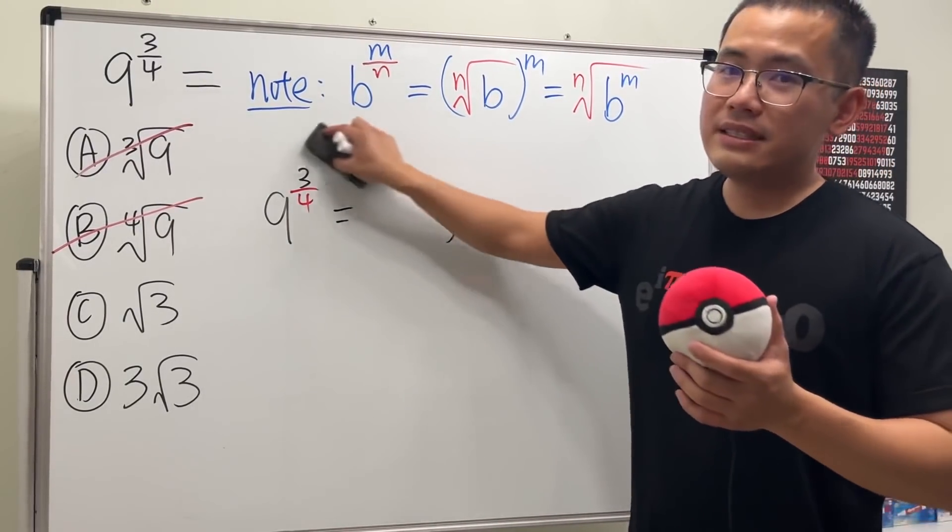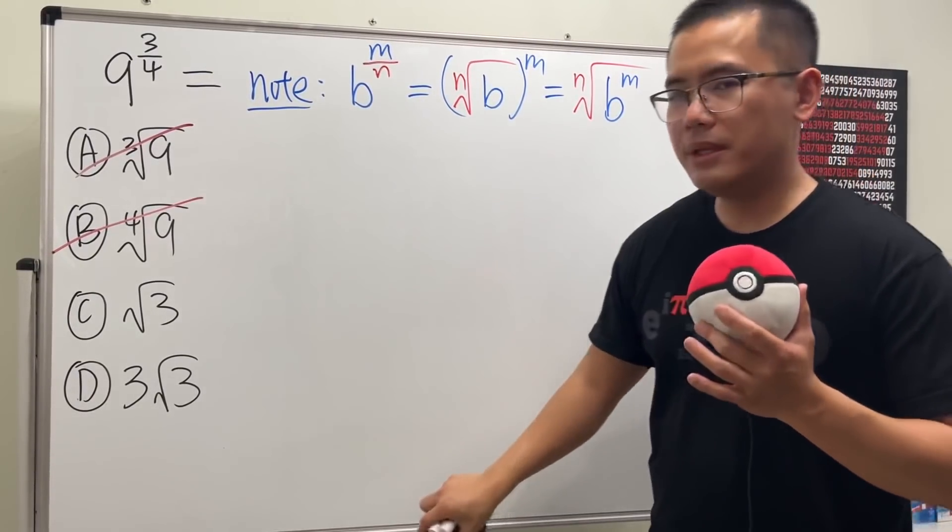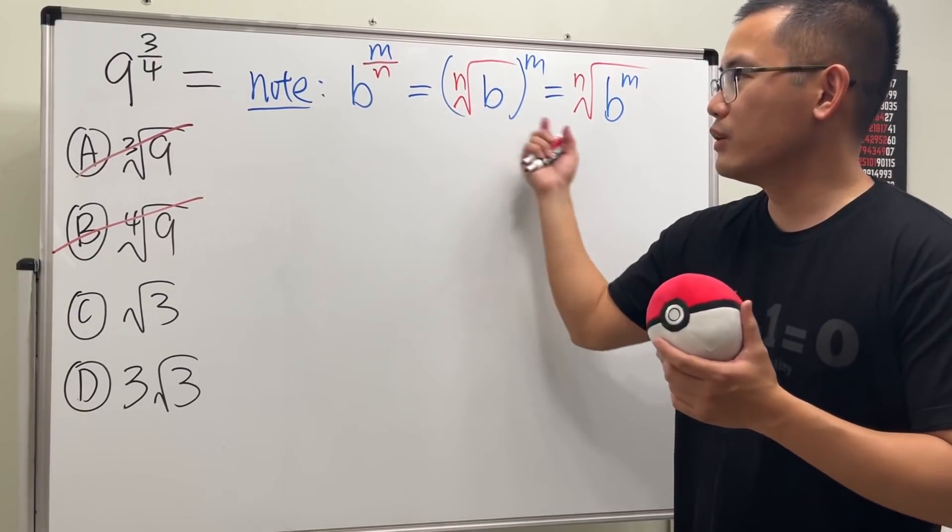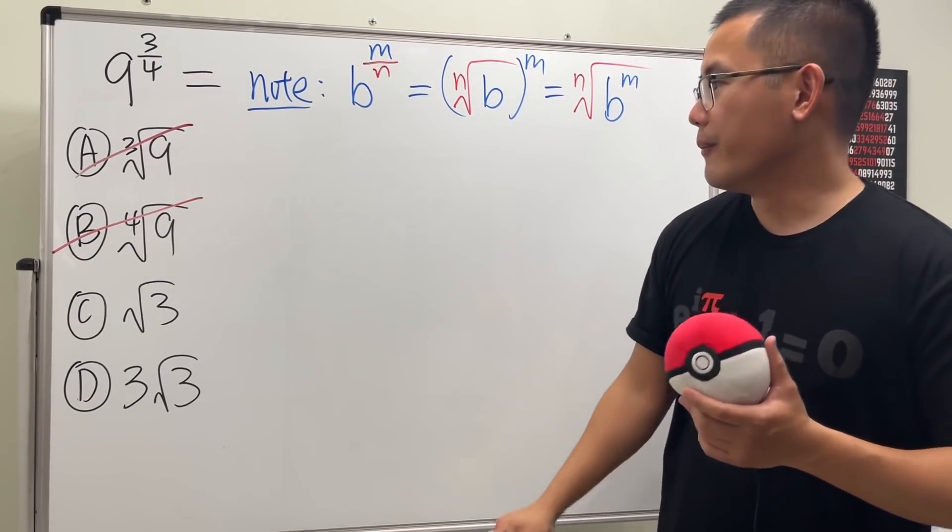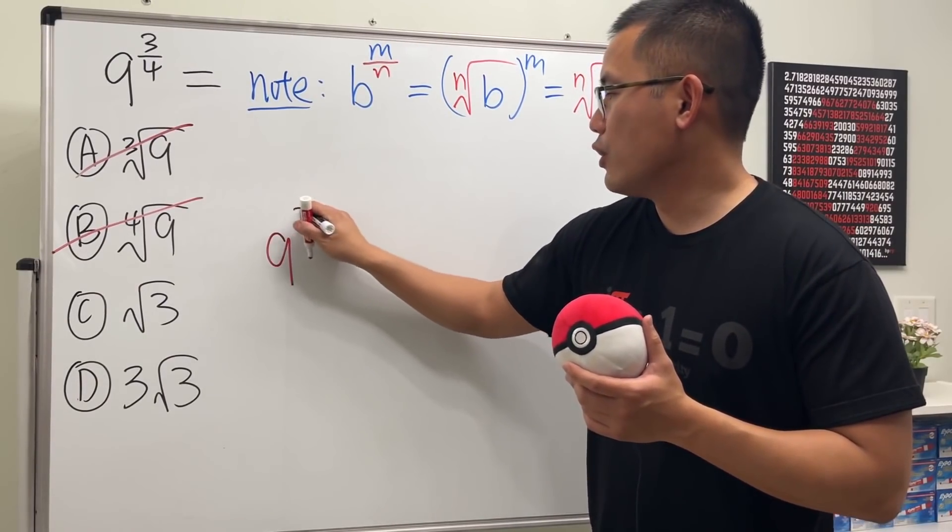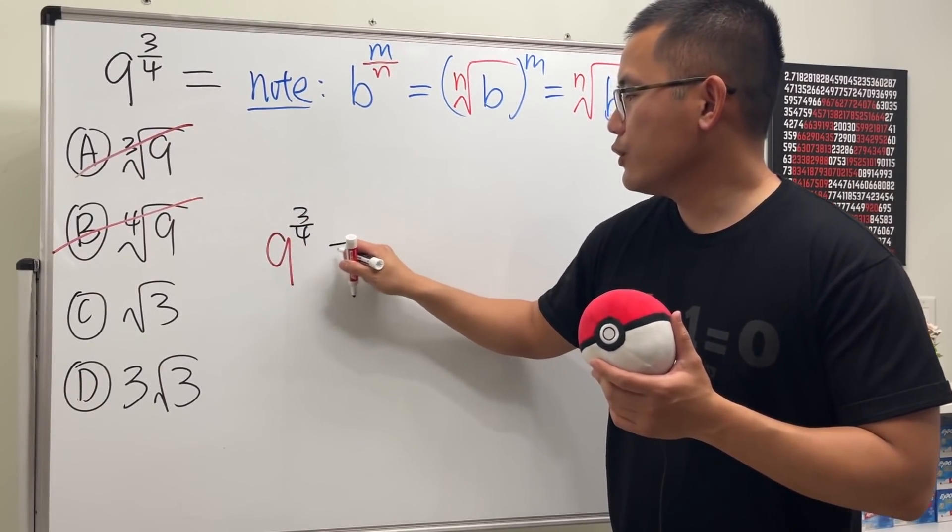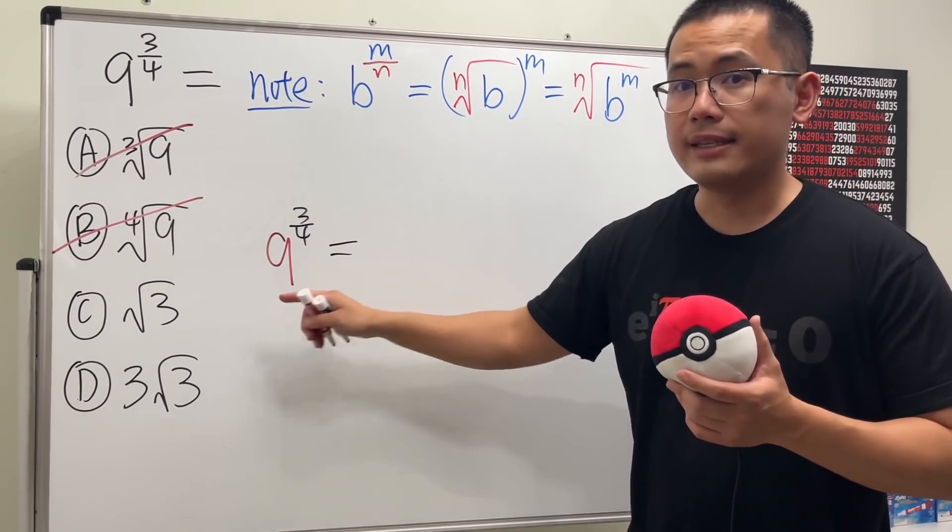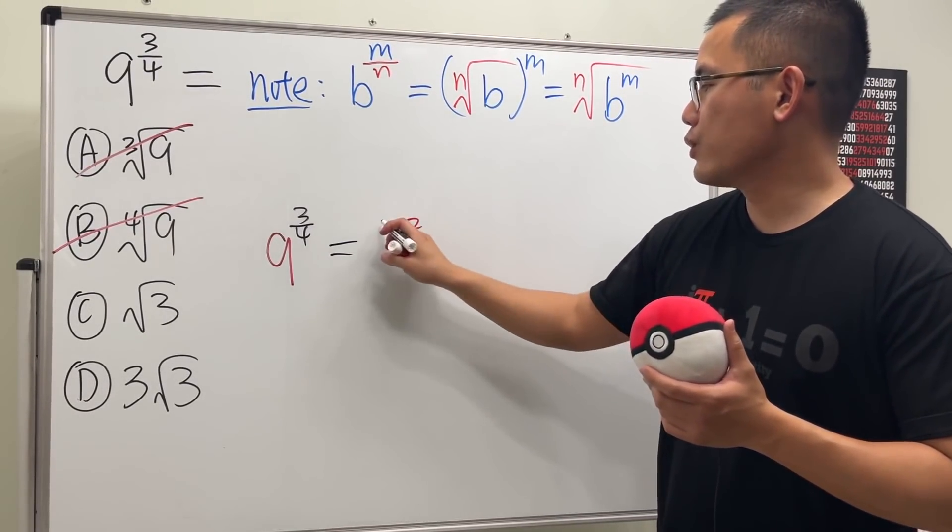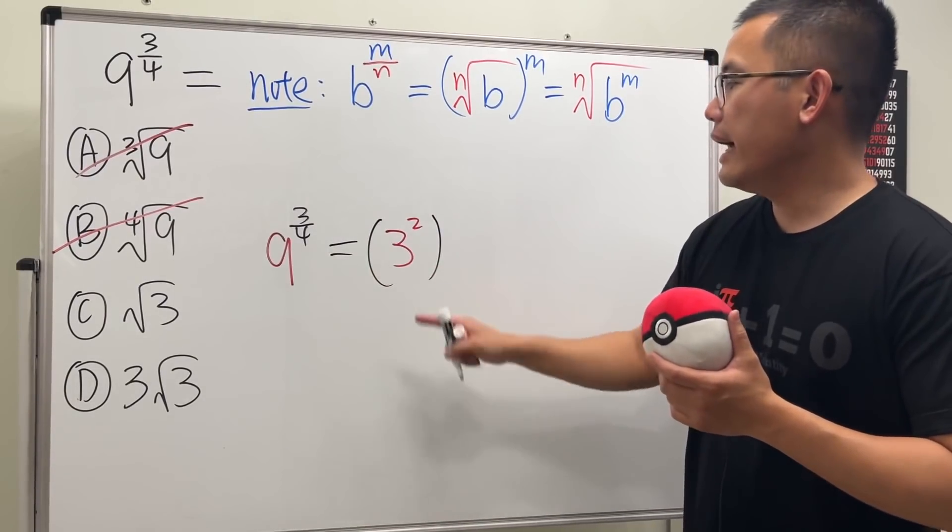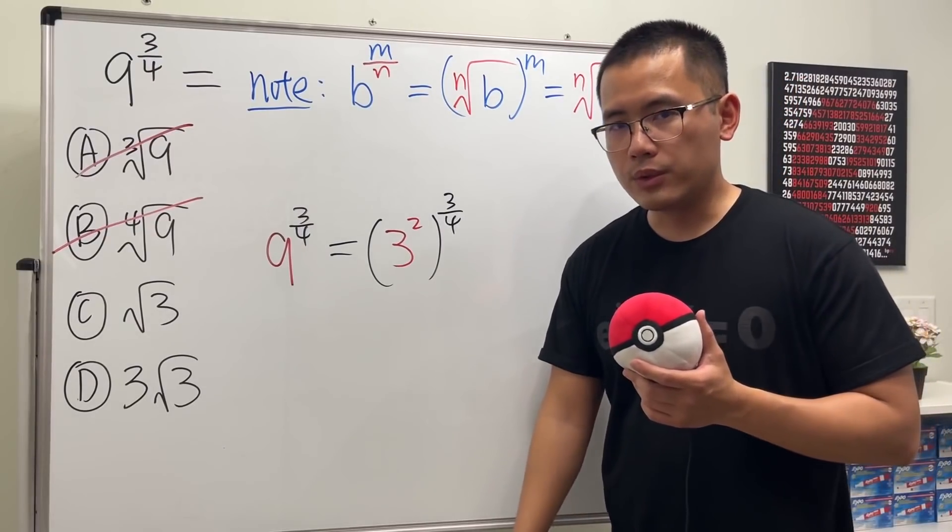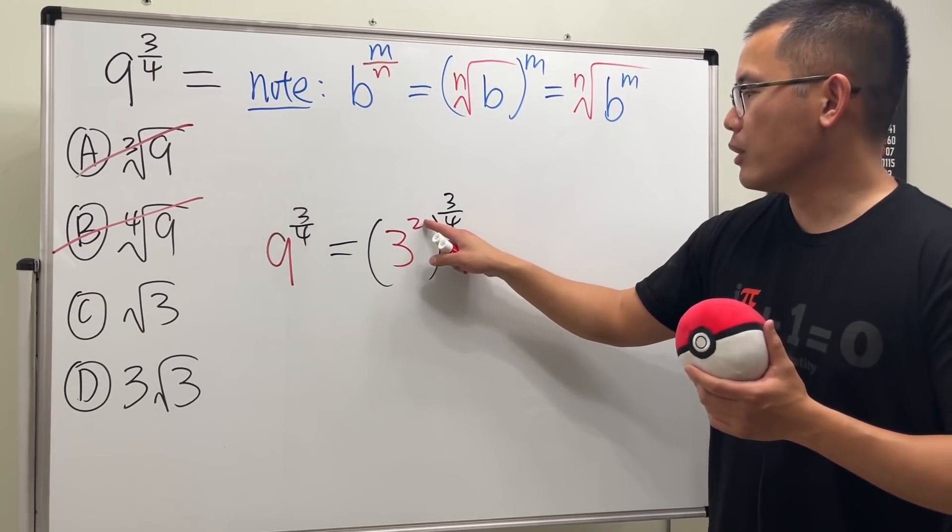But anyway, this is the SAT question, so it is designed to be a little bit tricky. We will actually have to do a little bit more work in order to use this. Here's the deal. When we have nine to the three over four power, what we are going to do first is we are going to look at the nine as three squared. Three times three is nine, so three squared is nine. And then raise that to this three over four power.